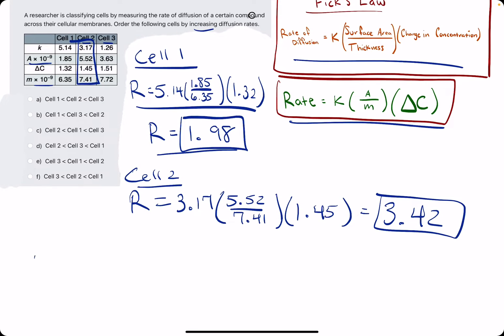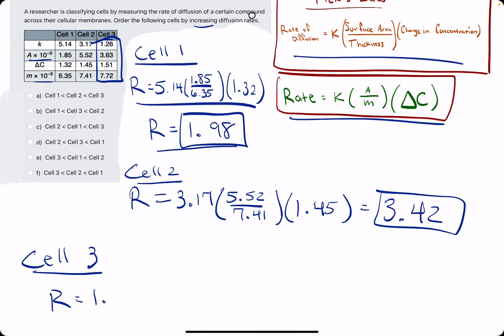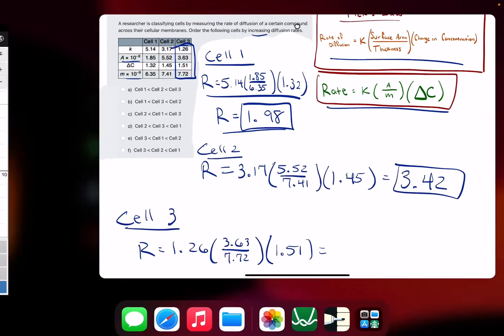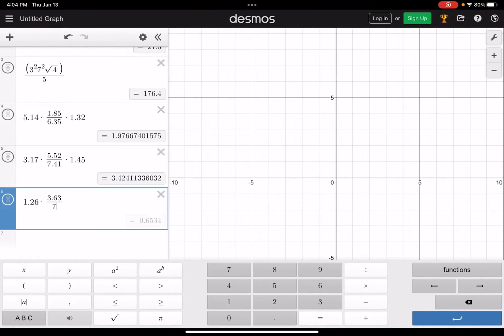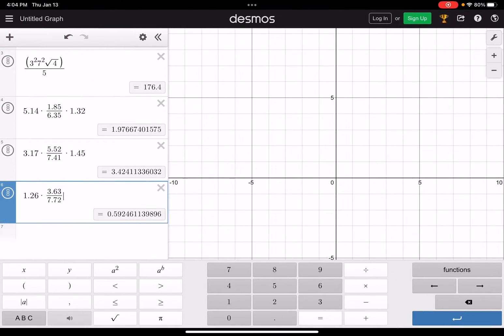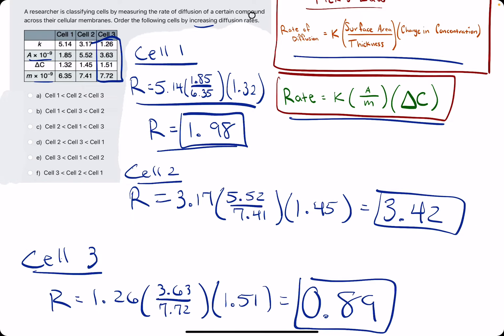All right, so we've done Cell 1 and Cell 2, let's knock out Cell 3 and put these in order. Cell 3 starts with K which is 1.26 times A over m, 3.63 over 7.72, all times 1.51. 1.26 times 3.63 divided by 7.72 all multiplied by 1.51, and we get about 0.89 as our final rate of diffusion.